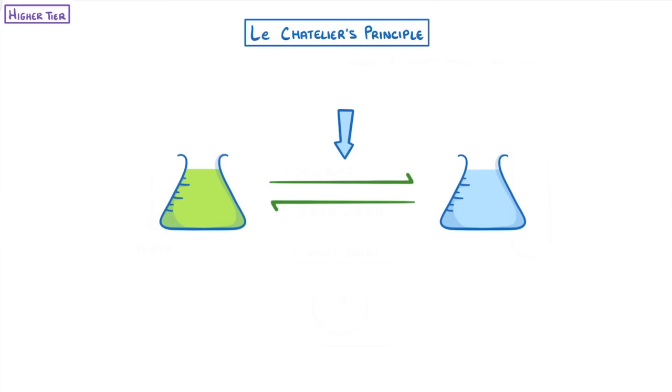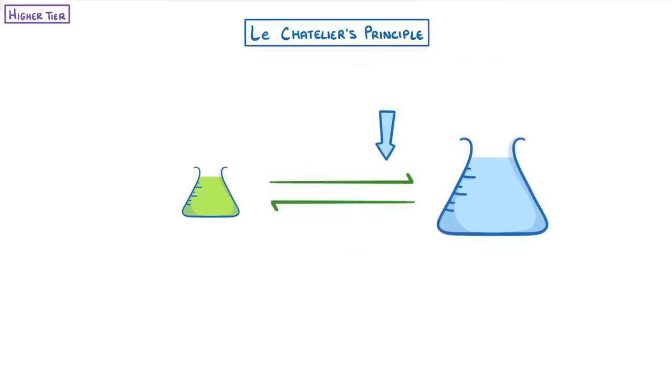We saw in the last video that the position of equilibrium refers to how many reactant particles there are compared to how many product particles there are when at equilibrium. For example, we would say that the equilibrium lies to the left if there are more reactants, and to the right if there are more products.